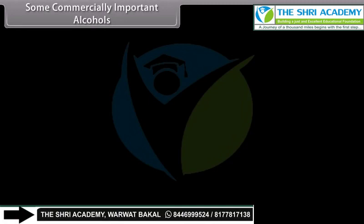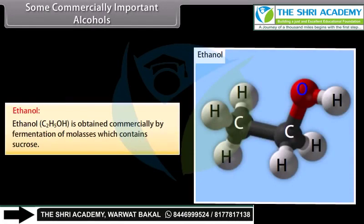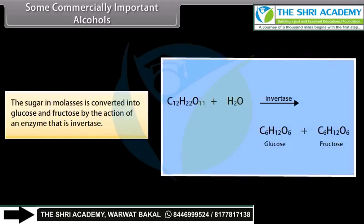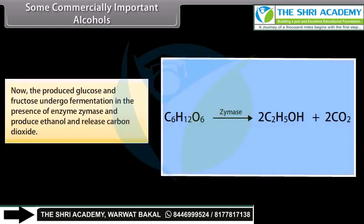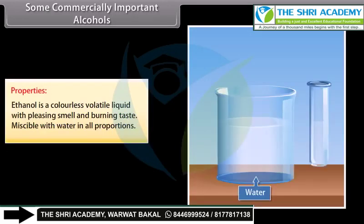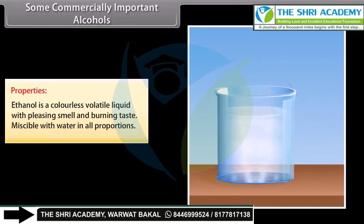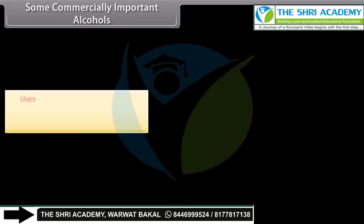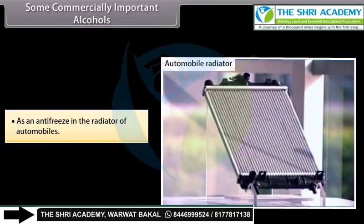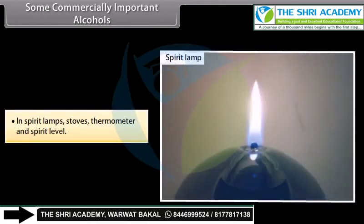Ethanol: Ethanol is obtained commercially by fermentation of molasses which contains sucrose. The sugar in molasses is converted into glucose and fructose by the action of an enzyme, invertase. The produced glucose and fructose undergo fermentation in the presence of enzyme zymase and produce ethanol, releasing carbon dioxide. Properties: Ethanol is a colorless, volatile liquid with pleasing smell and burning taste, miscible with water in all proportions. Uses: as an antiseptic in the form of rectified spirit; as an antifreeze in the radiator of automobiles; in spirit lamps, stoves, thermometers and spirit level.